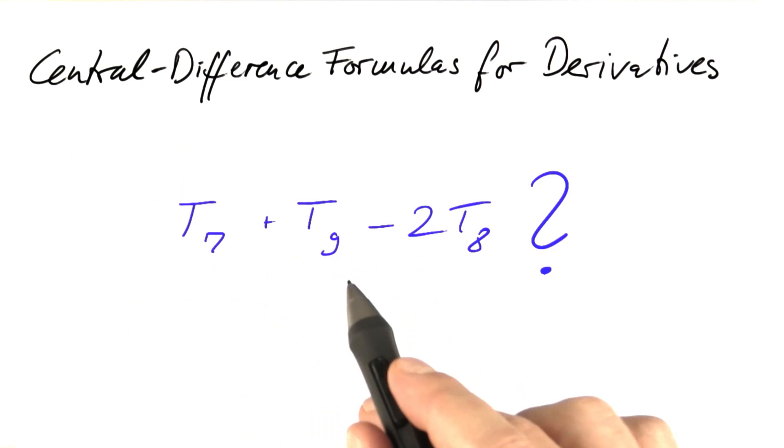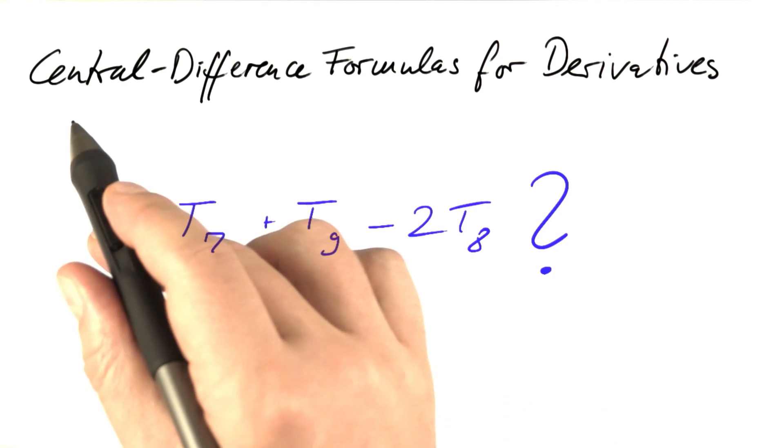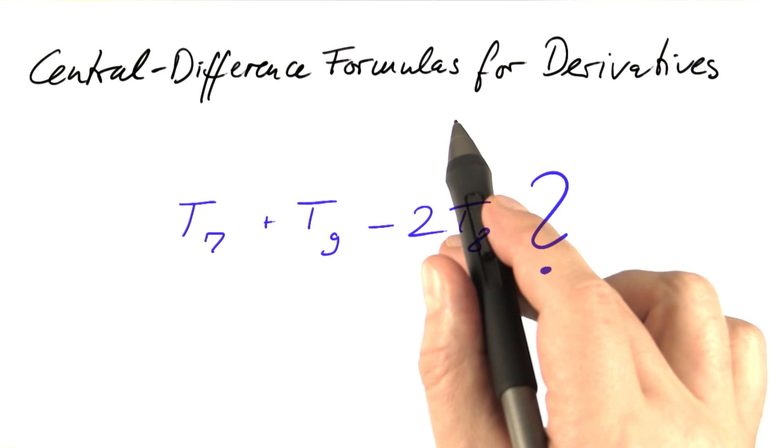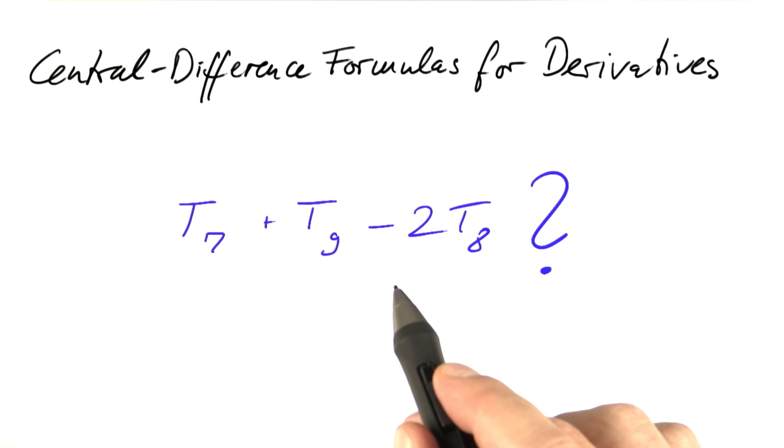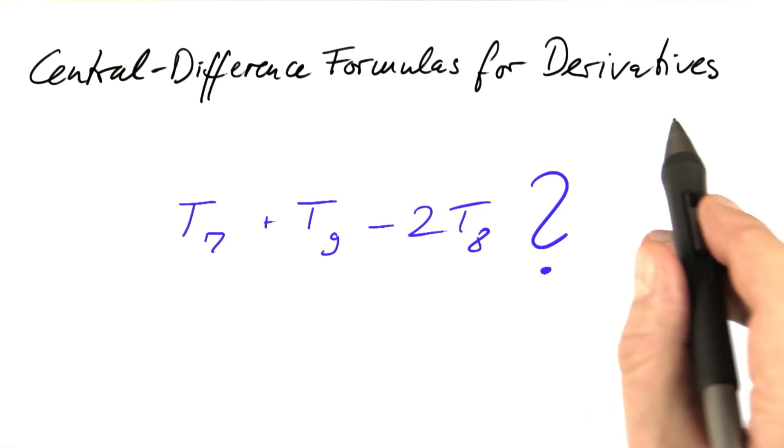This strange expression appeared in our equation for heat conduction along a wire. Now we look into its mathematical meaning. A scary name for this topic is central difference formulas for derivatives.